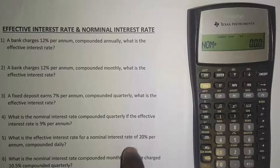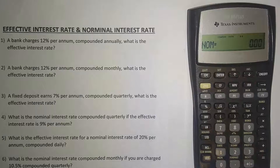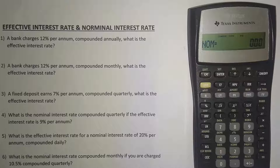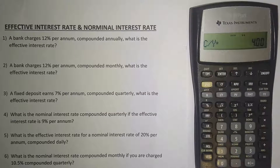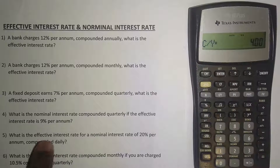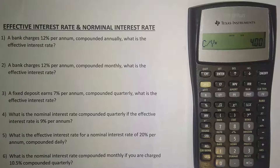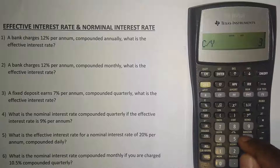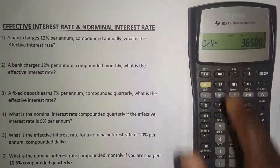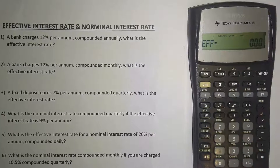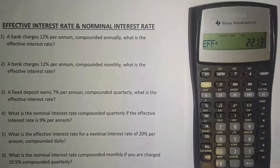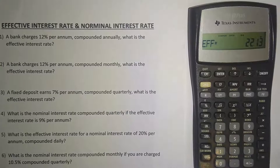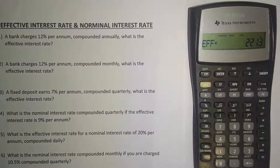Example 5 — what is the effective interest rate for a nominal interest rate of 20 percent per annum compounded daily? Enter 20 as the nominal and press Enter. Press the upward arrow and set the compoundings per year to 365, since there are 365 days in a year. Press Enter, then the upward arrow again, then CPT — and the effective interest rate is 22.13 percent.